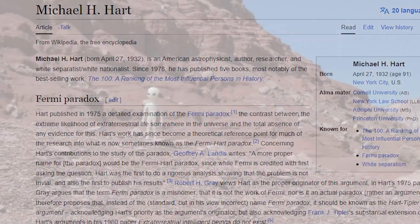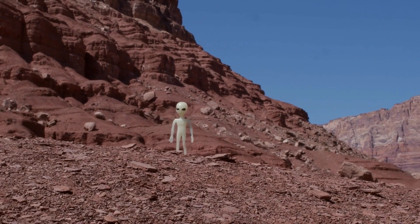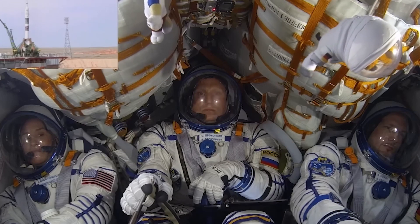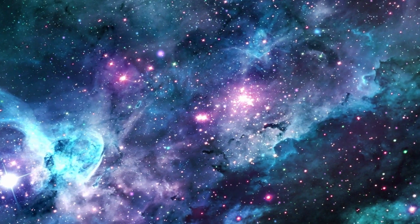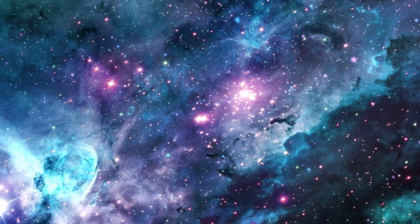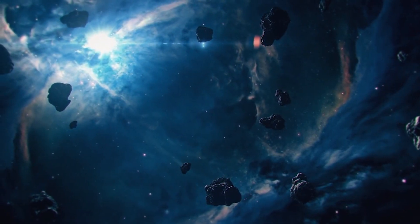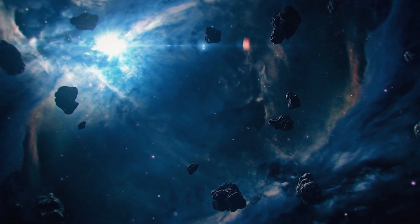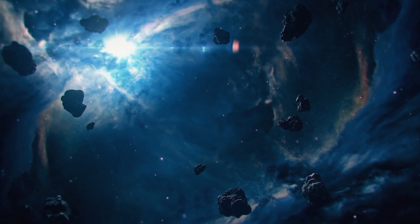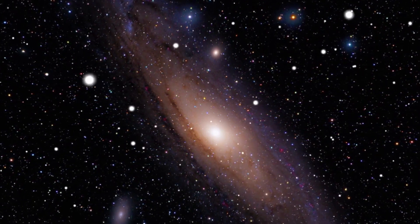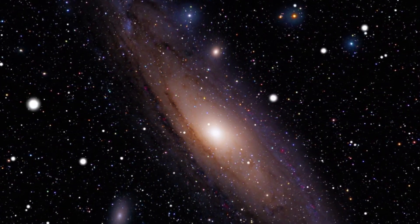Astrophysicist Michael Hart claimed that if we haven't seen any evidence of extraterrestrial life, they don't exist. Humans can expand our reach by embarking on expeditions to the 100 nearest stars, just 20 light-years away from our sun. These colonies would then launch their expeditions, creating a chain reaction of exploration. With such rapid expansion, we could explore most of the Milky Way galaxy within 650,000 years.